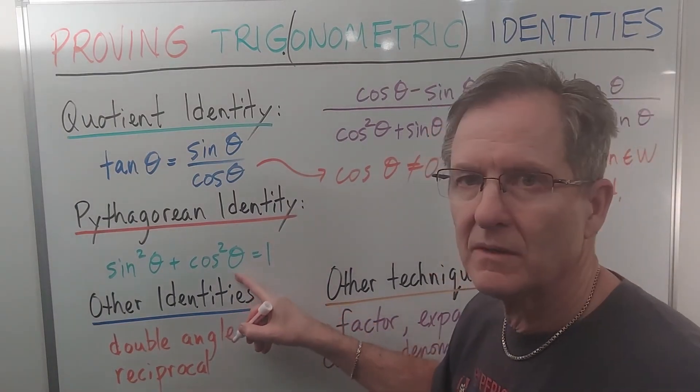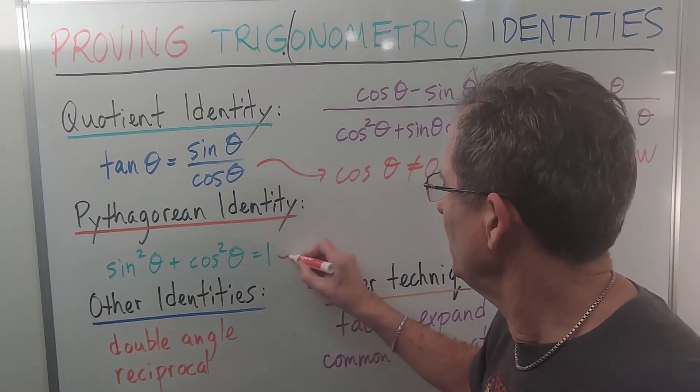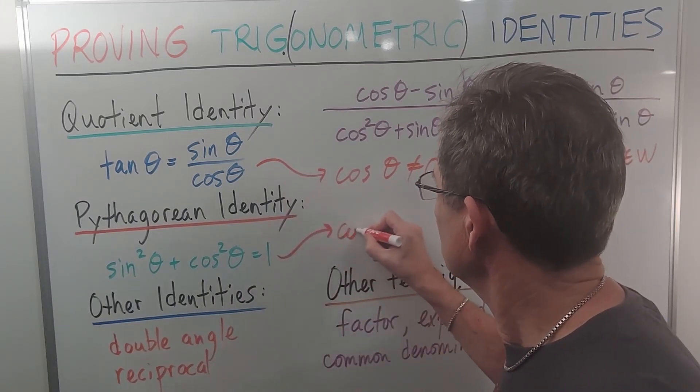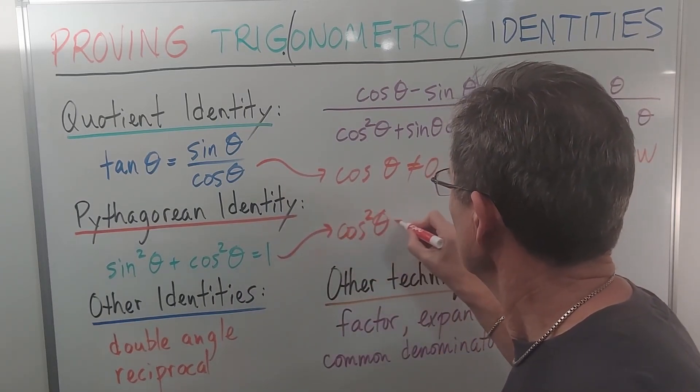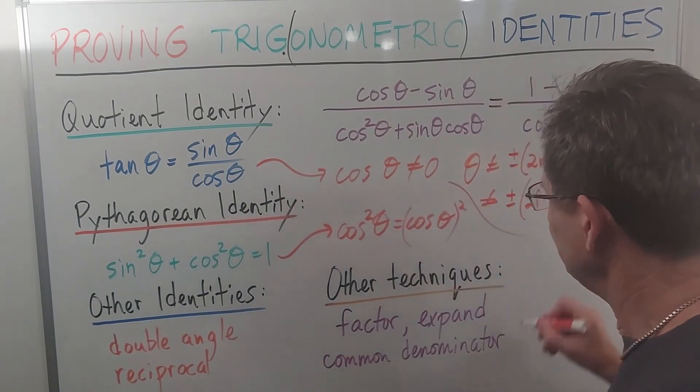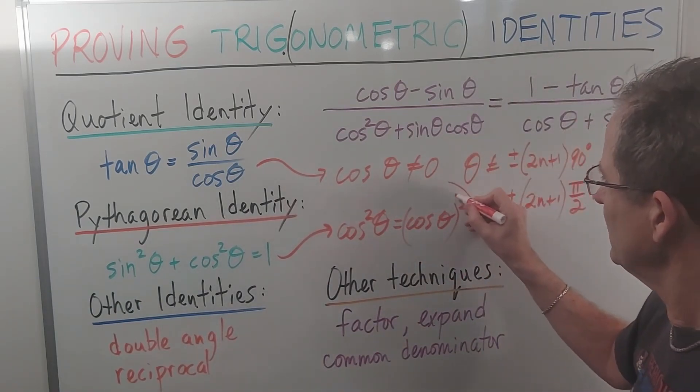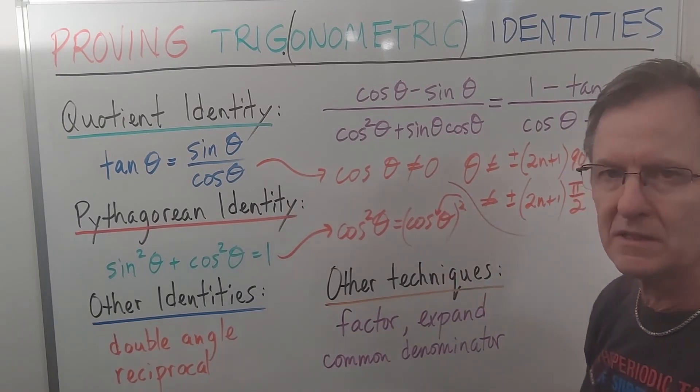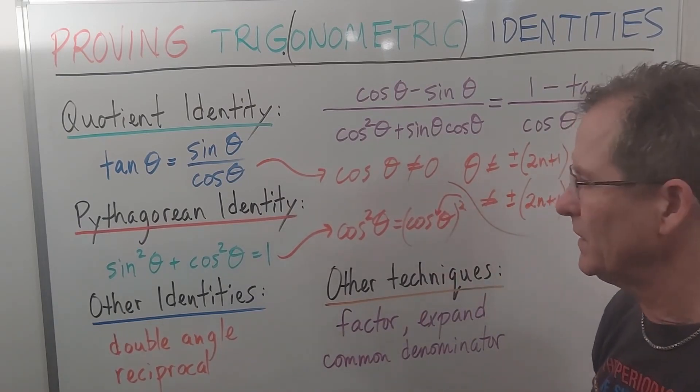And by the way, when I write cos²θ, for example, that means cos(θ) squared. Mathematicians are lazy, so they put the 2 here, and they don't put the brackets, but you need to understand what cos²θ means.